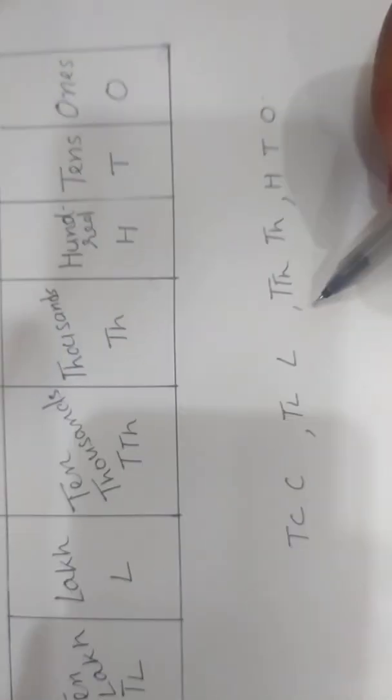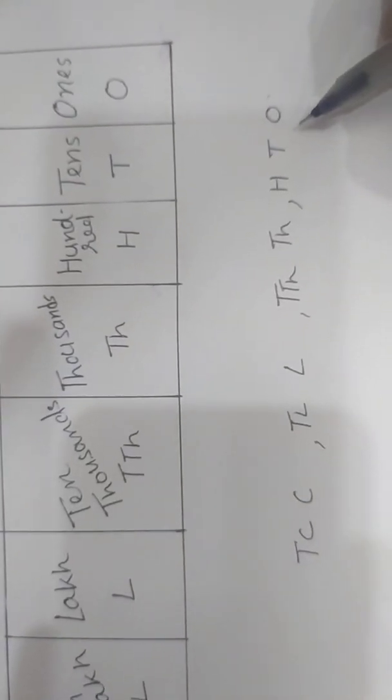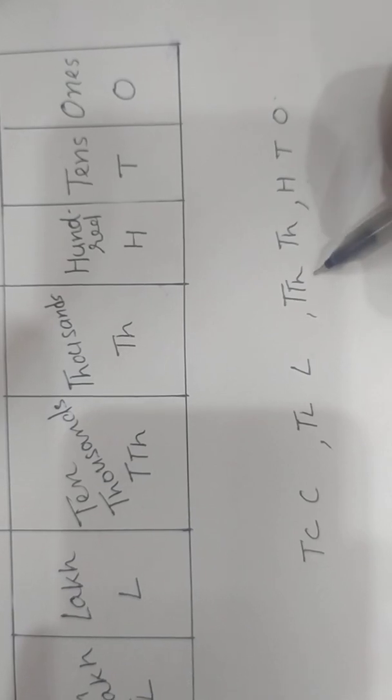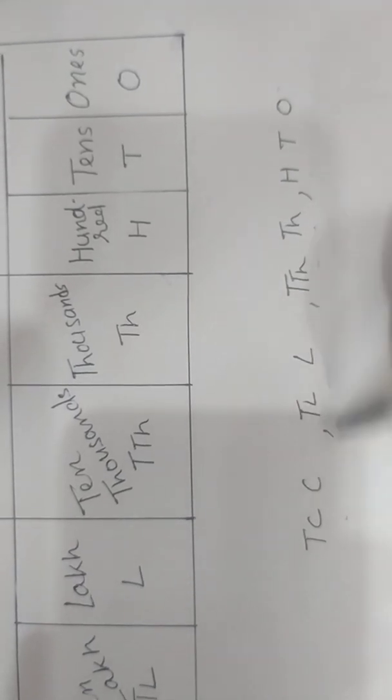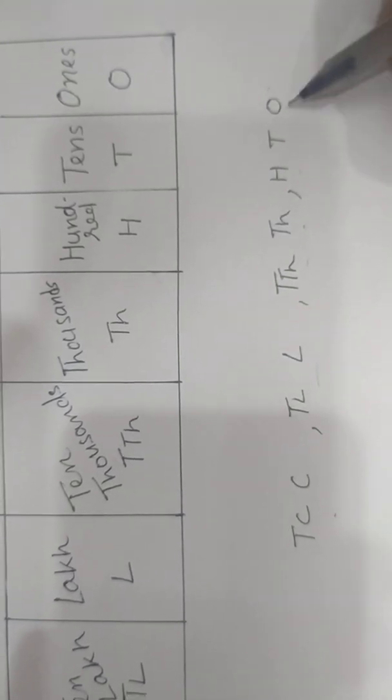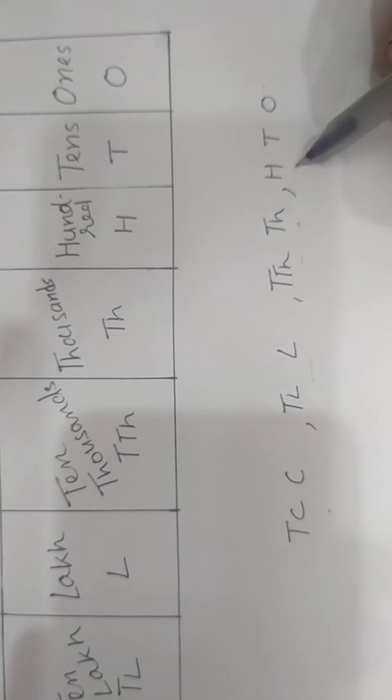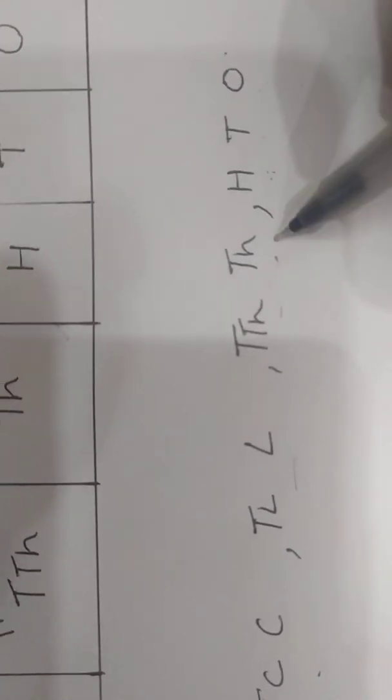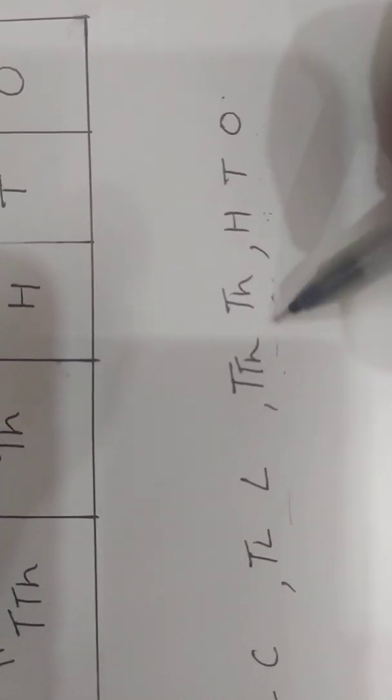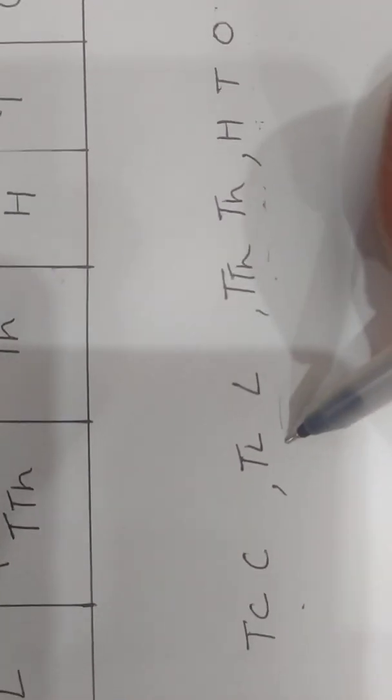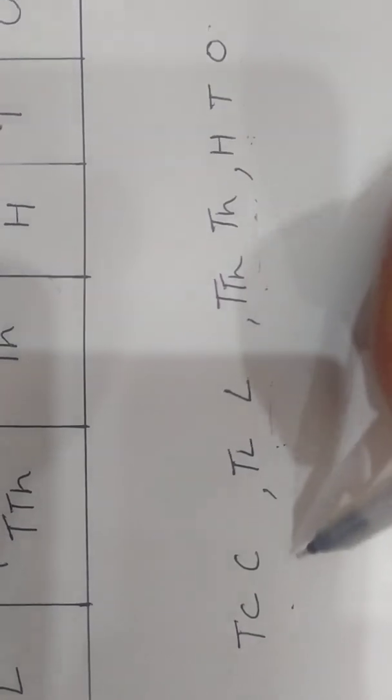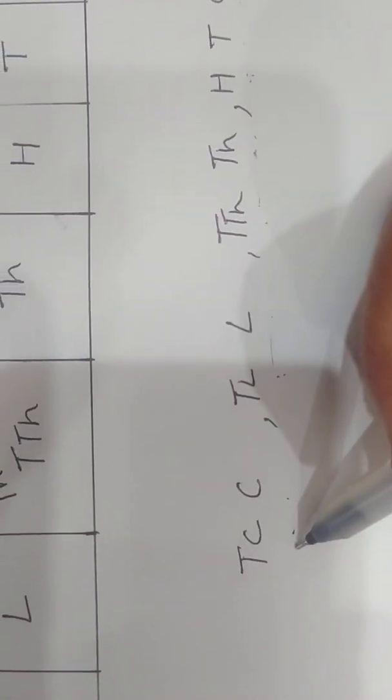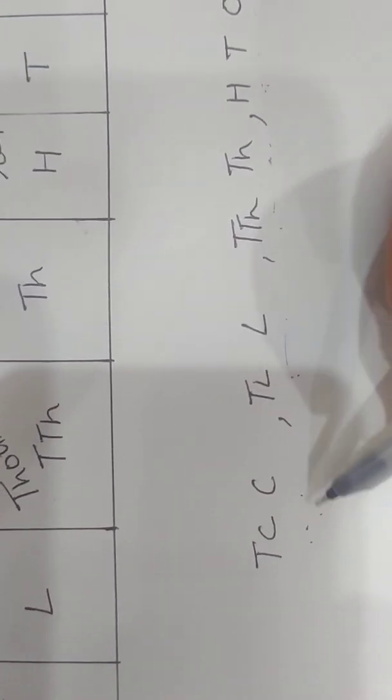Group the digits in first three and then two, two, two. Means once period ke under jo hum group karenge wo three ka karenge: ones, tens, or hundred. Thousand period ke under two group ayenge: thousand or ten thousand. Lakh me: lakh or ten lakh. Crore me: crore or ten crore. Is it clear?